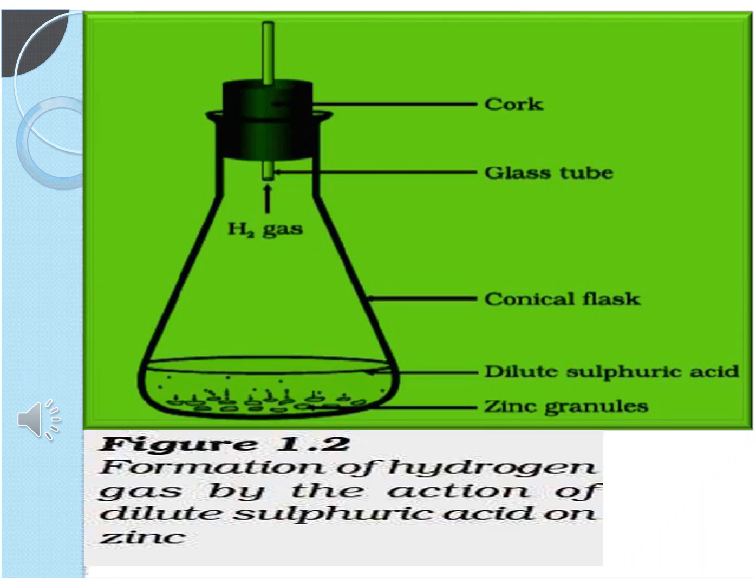One more example is given here: formation of hydrogen gas by the action of dilute sulfuric acid on zinc. When zinc reacts with H2SO4, zinc sulfate is formed along with the liberation of hydrogen gas.